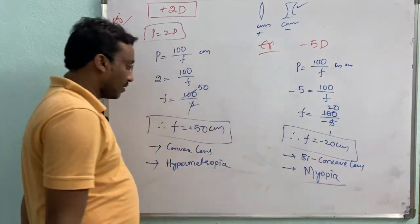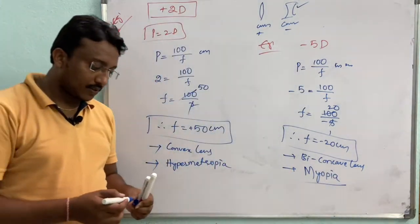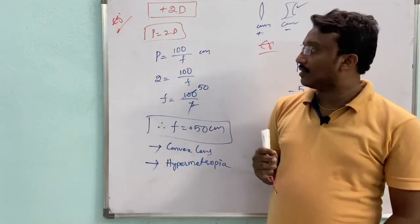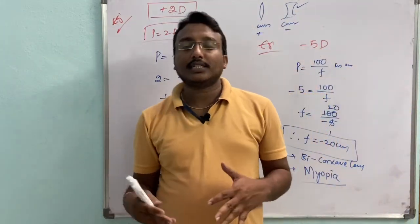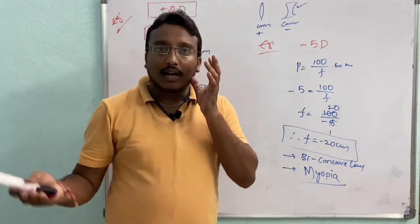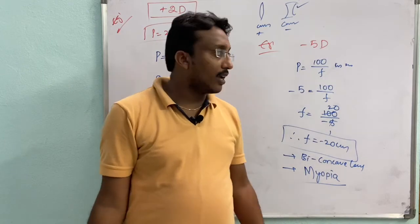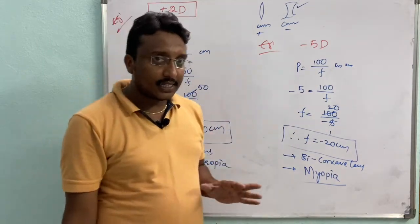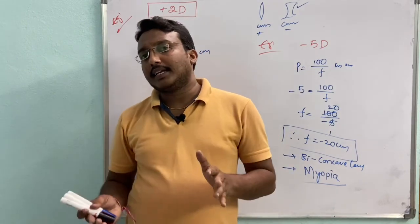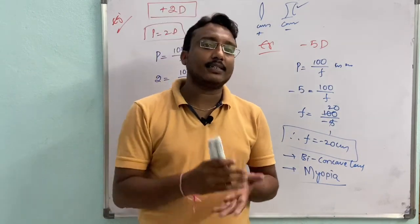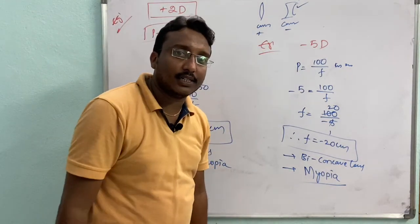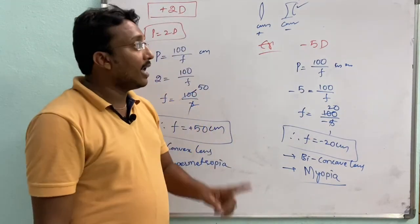This is the way of solving problems on power of lens, which is an important topic. You will most probably get questions on it in polytechnic examinations and other competitive examinations. In this class we discussed presbyopia, which is corrected by using a bifocal lens, and we discussed the power of a lens — the reciprocal of focal length — with diopter as its unit.